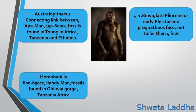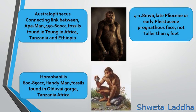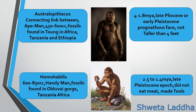After Australopithecus came Homo habilis, with a greater cranial capacity of 600 to 850 cc. They are also called the 'handyman.' Fossils are found in Olduvai Gorge, Tanzania, Africa. They are called handyman because they made tools from stones. It is believed that they were pure vegetarians and did not eat meat.